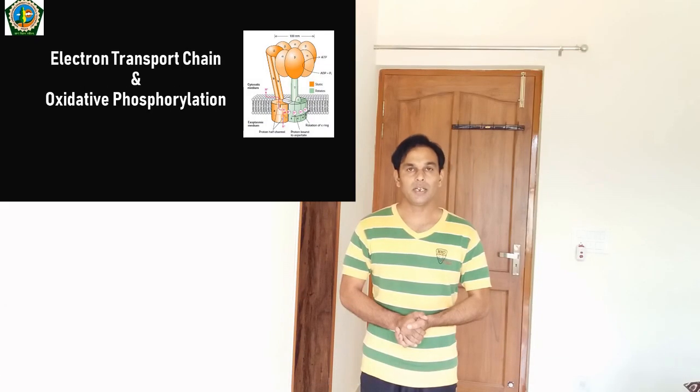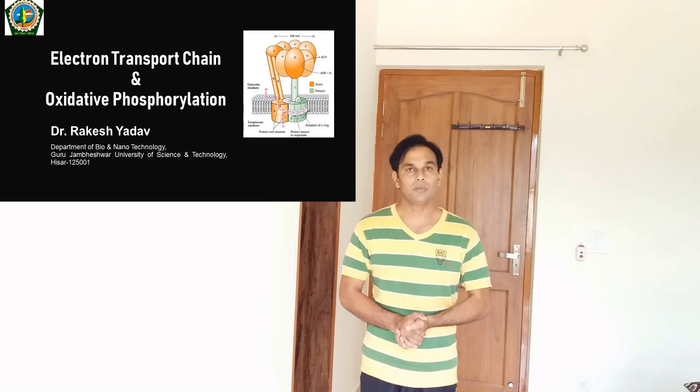Electron Transport Chain and Oxidative Phosphorylation happen in mitochondria and are the main source of energy in the aerobic respiration process.